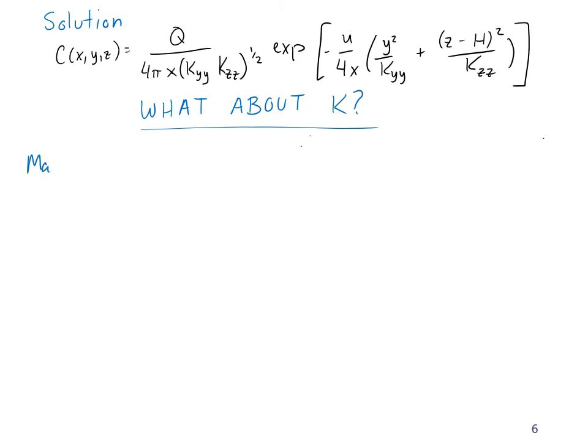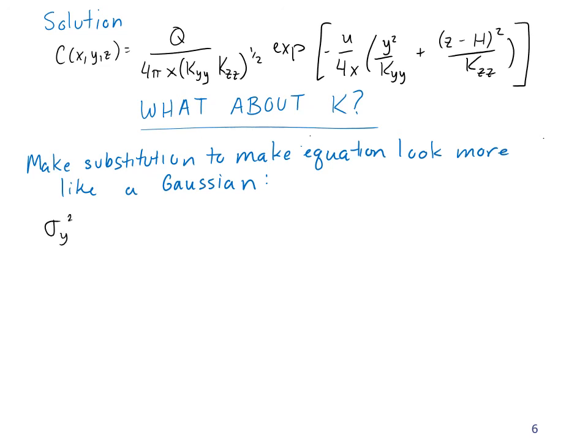We'll make a substitution to make the equation look more like a Gaussian function. We introduce σ_y² = 2k_yy·t = 2k_yy·x/u, where time is the time downwind from the source, equal to distance divided by velocity. Likewise, we introduce σ_z² = 2k_zz·x/u.